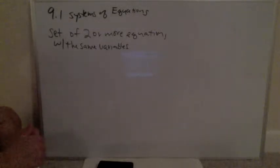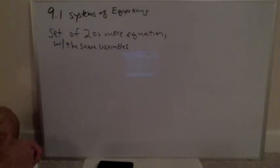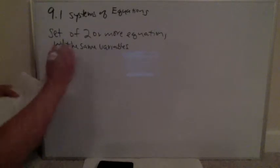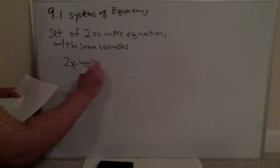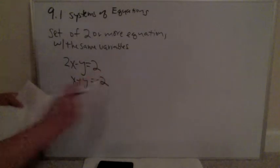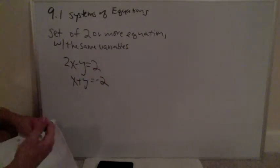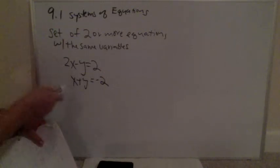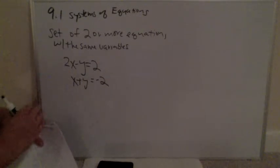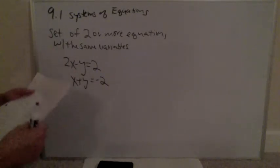We are talking about section 9-1, systems of equations. A system of equations is a set of two or more equations with the same unknowns or variables. An example would be 2x subtract y equals 2, and x plus y equals negative 2. Instead of solving for one equation with one unknown, we have two equations and two unknowns. We're going to find the pair of x and y where it's true for both.